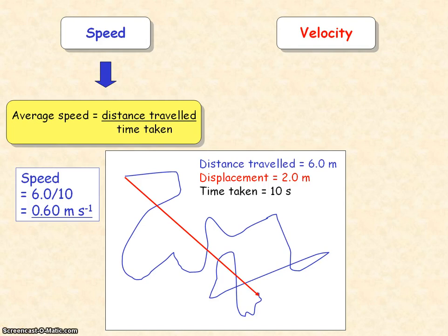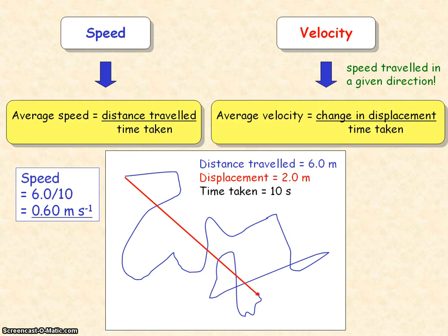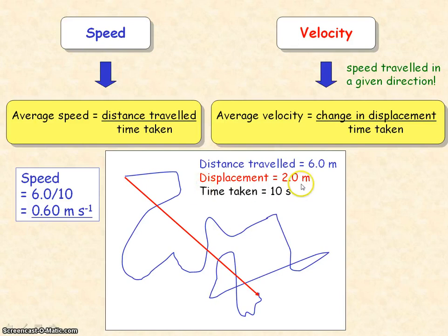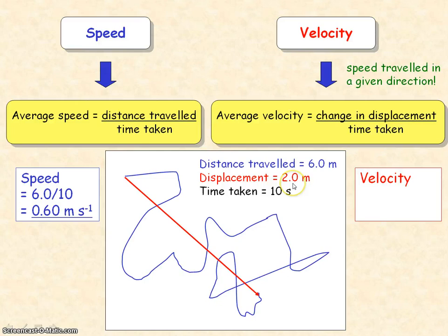Velocity, which is a vector quantity, has direction — it's speed in a given direction. Average velocity is equal to the change in displacement divided by the time taken, and this equation defines average velocity. In our example, the displacement is 2 meters and the time taken is 10 seconds, so velocity equals 2 meters divided by 10 seconds, which equals 0.20 meters per second.